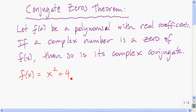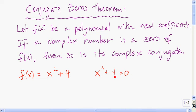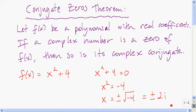Let's see an example. Here f of x is x squared plus four. Let's find the zeros of f of x. This is a polynomial and the coefficients are real numbers — the coefficient of x squared is one, and the four is a real number as well. We find the zeros: x squared plus four equals zero, x squared equals negative four, x equals plus or minus the square root of negative four, which is plus or minus 2i. So the zeros are x equals 2i and negative 2i, and those two are complex conjugates of one another.